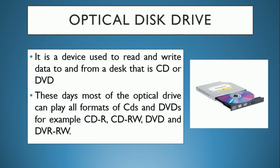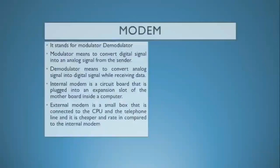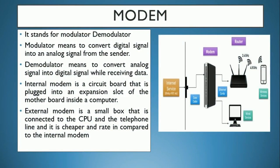It depends on how you want to use your computer. The optical disk drive is used to read and write CDs and DVDs. For CDs the storage is 650 to 700 MB, while for DVDs it is 4 GB or 8 GB. Next, modem — modem means modulator-demodulator. The modulator converts digital signals into analog signals. There are two types of modem: internal and external. Internal modem is built inside the PC.